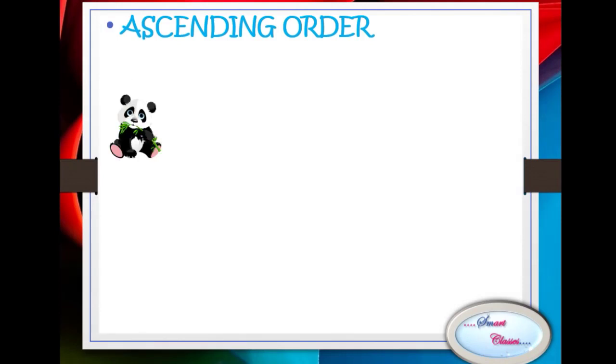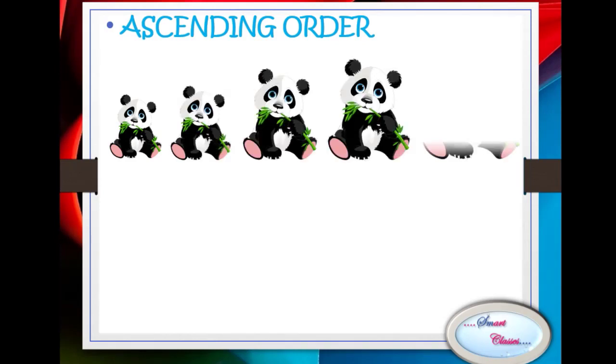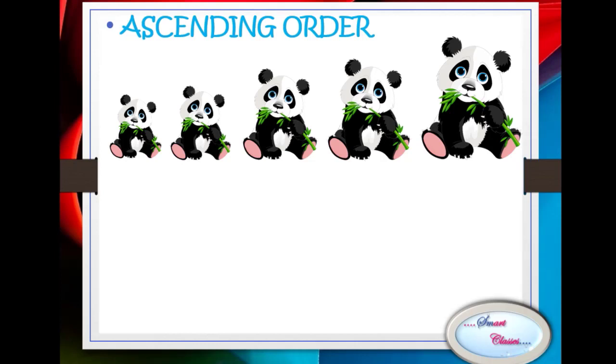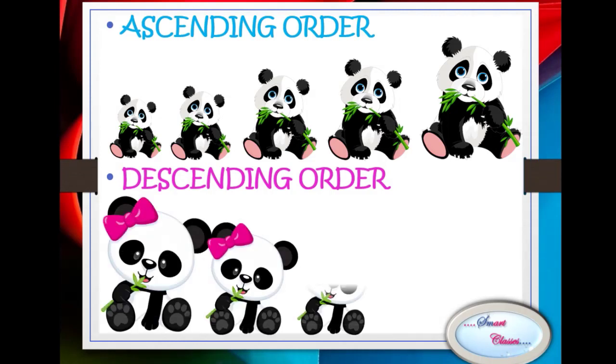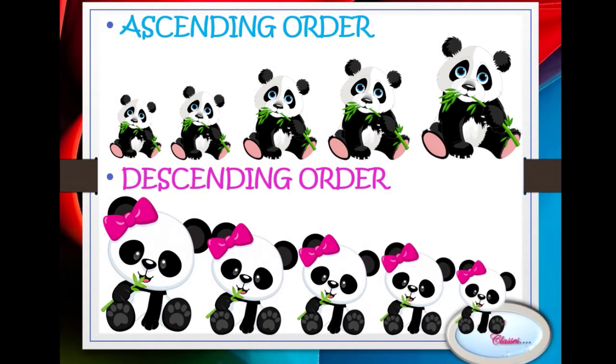Always remember that when we are talking about ascending order, we move towards the larger number, which means to move upwards, to increase, or to climb. For example, we can see here the height of panda in an increasing order. This is an example of ascending order. While when we are talking about descending order, it means coming down, decreasing, or moving downwards. For example, height of panda in decreasing order. This is an example of descending order.